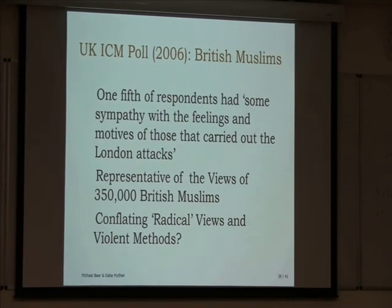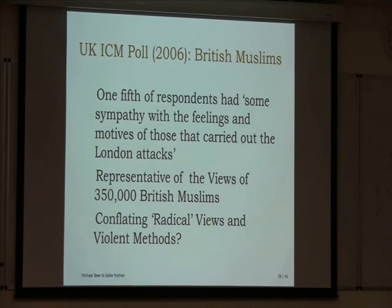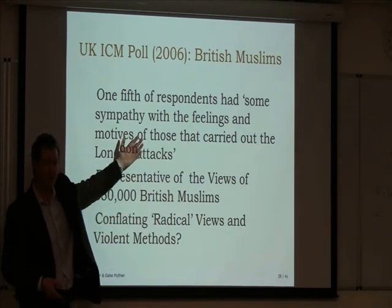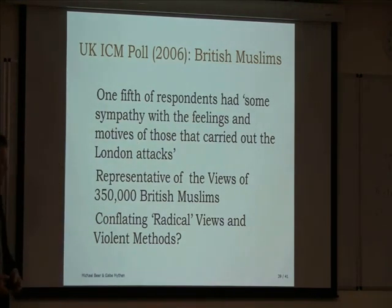Some caveats on timing and the questions asked: but one-fifth of respondents — British Muslims — had some sympathy with the feelings and motives of those who carried out the 7/7 attacks. If that is accurate, it would be representative of about 350,000 British Muslims. So what's happening in the whole debate about radicalization is a kind of conflation — of what might be determined as radical views, which we might find very reasonable given the geopolitical situation, and violent methods. They seem to be rolled together.